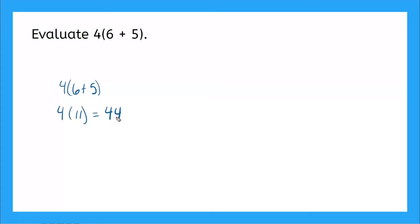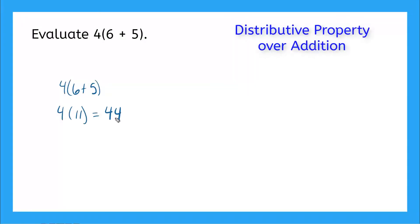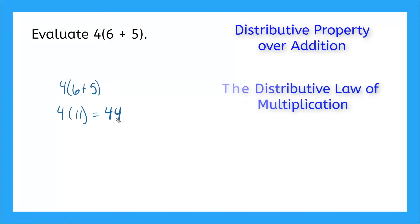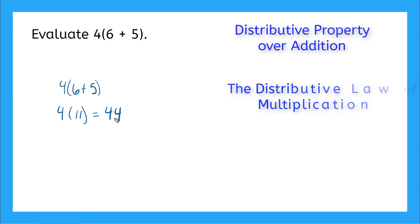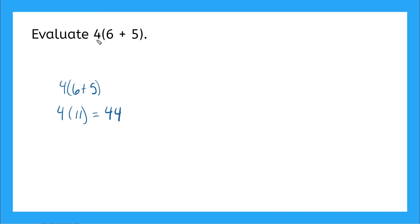Pretty easy, right? But this lesson is on the distributive property over addition. Sometimes we use a fancy name for this called the distributive law of multiplication. So let me show you how that works. What we actually do is we take what's outside of the parentheses — our 4 — and we distribute it to what's inside our parentheses.